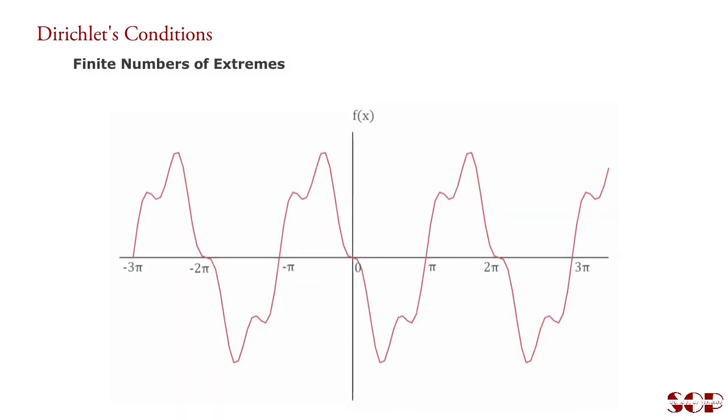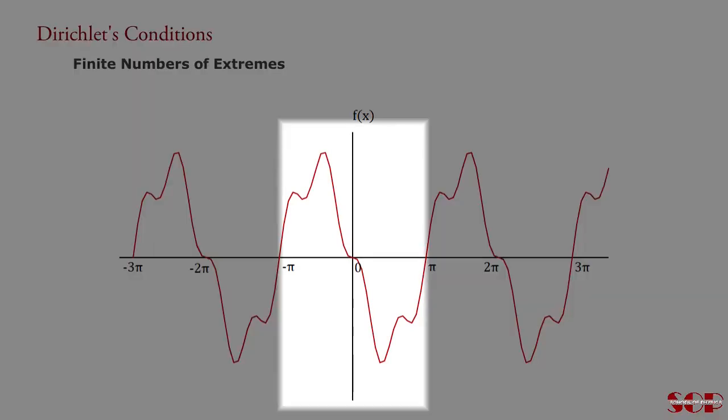Consider another periodic function as shown in the figure. In interval -π to π, it has two maxima and two minima. There are a total of four extremes in a period. It means the function has finite extremes.